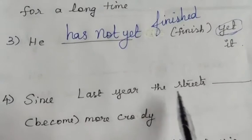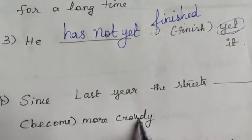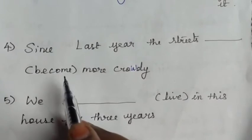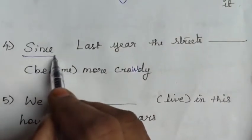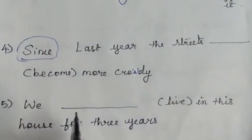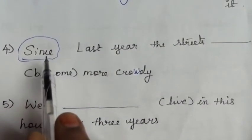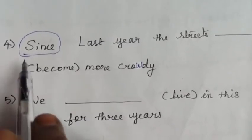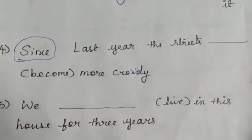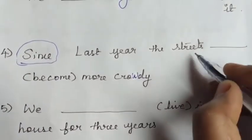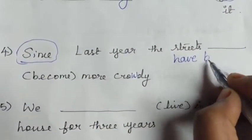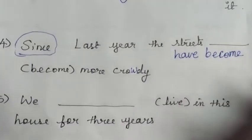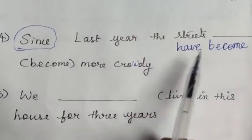Next: 'Since last year, the streets dash become crowdy.' 'Become' cannot take -ing form. Even though 'since' is a clue word for present perfect continuous, because the verb is 'become', we use present perfect tense instead. 'Streets' is plural, so 'have'. Verb 3 of become is 'become'. Answer: 'Since last year, the streets have become more crowdy.'